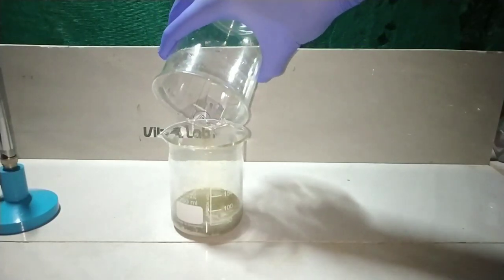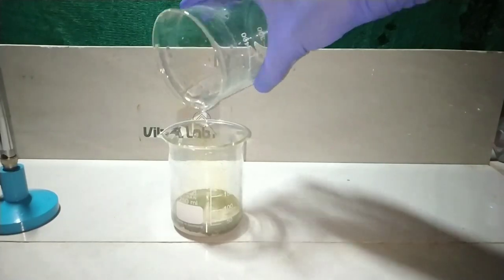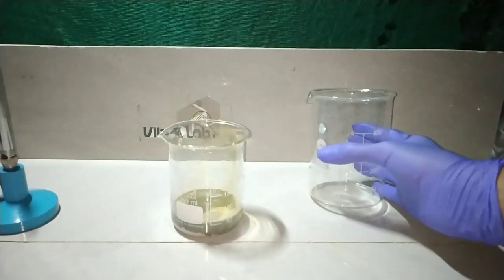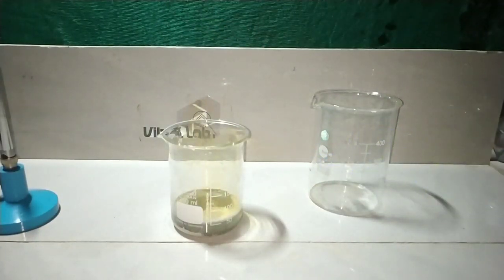Soon after adding the nitric acid, you see the reaction has started and brown fumes of nitrogen dioxide are formed. The reaction will be much faster because the metal is in its powdered form and the surface area is large.